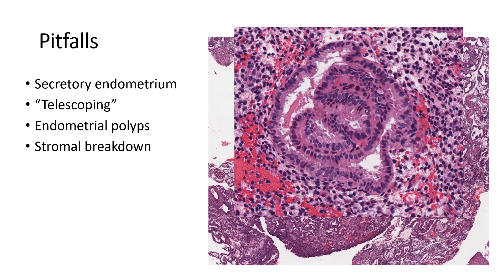Another pitfall is an artifact called telescoping. Sometimes the endometrial gland slides in on itself, and when you cut through that area, you wind up with a little bit of tissue floating in the middle of the gland lumen, not connected to the side. At low power it might look like there's crowding or architectural complexity, but if you note this tissue is just floating there, you know it's not real.